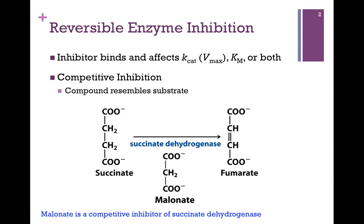Let's look at competitive inhibition. In the simplest case, the inhibitor resembles the substrate. Here we have the example of succinate dehydrogenase. It catalyzes the conversion of succinate to fumarate — we've oxidized the carbon-carbon bond between the two methylene groups to form a double bond. Malonate is a competitive inhibitor of this reaction. Notice it resembles succinate very closely; we're simply missing one of those methylene groups. Malonate can bind in the active site in place of succinate, but no chemistry can occur because we're missing one of the methylene groups.